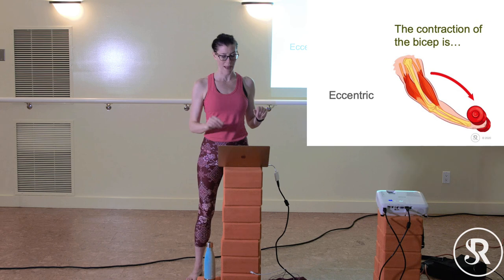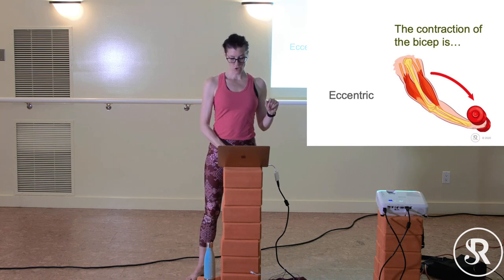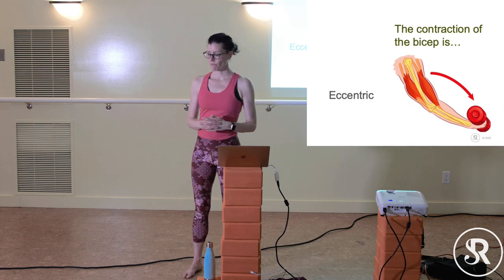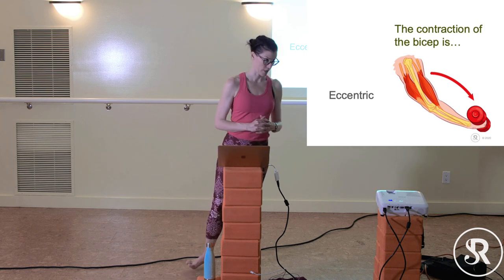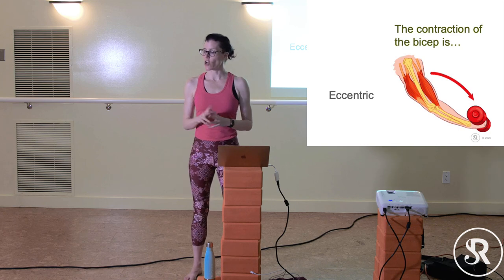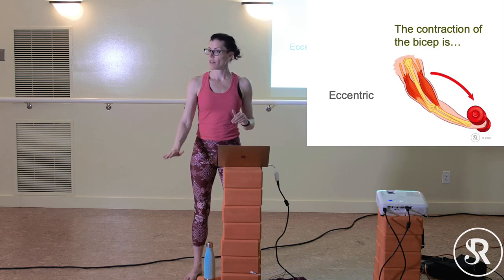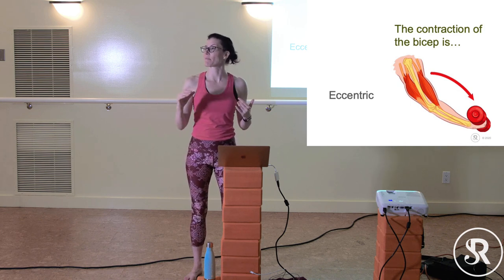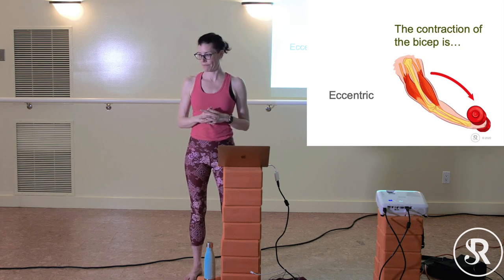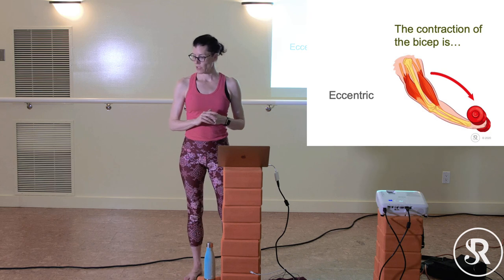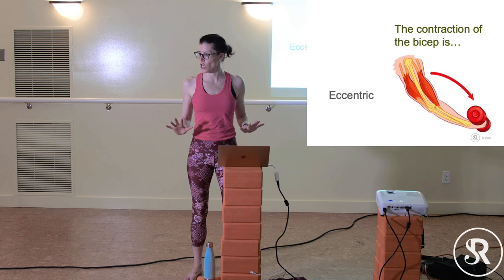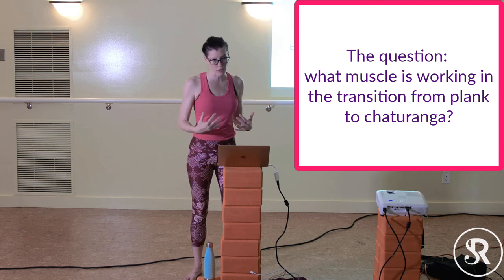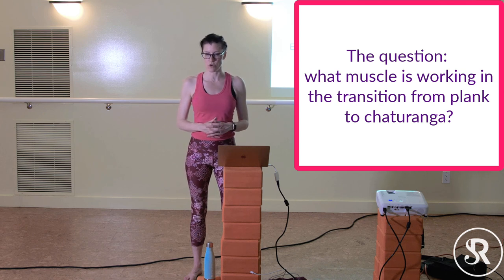Our muscles are always resisting gravity to some extent. Think about the transition from plank to chaturanga: eccentric contraction is what happens when we're resisting the fall into gravity — something is lengthening but working against the force of gravity. Get into groups of three and think about which muscle is really working in that transition and what it's doing.